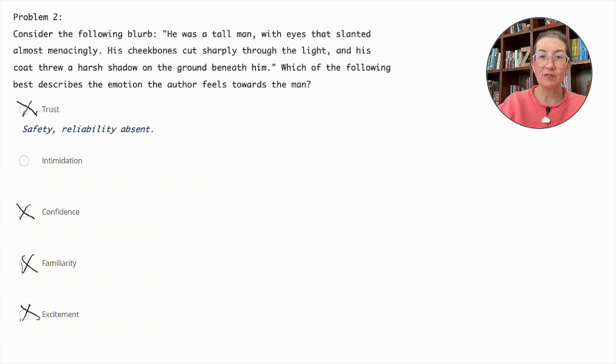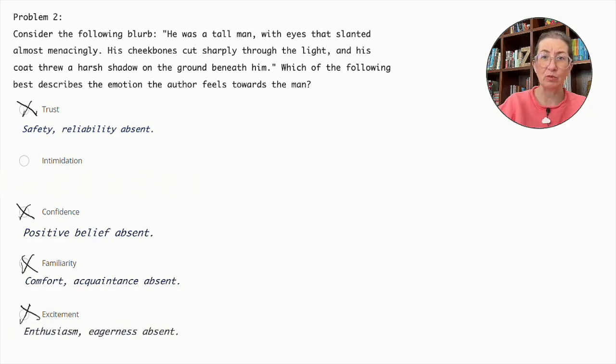Trust would imply a feeling of safety and reliability, which is not present here. Confidence suggests a positive belief in someone's ability, which the description does not support. Familiarity indicates a sense of comfort and acquaintance, but the tone is too ominous for that. Excitement would suggest enthusiasm or eagerness, which is also absent.